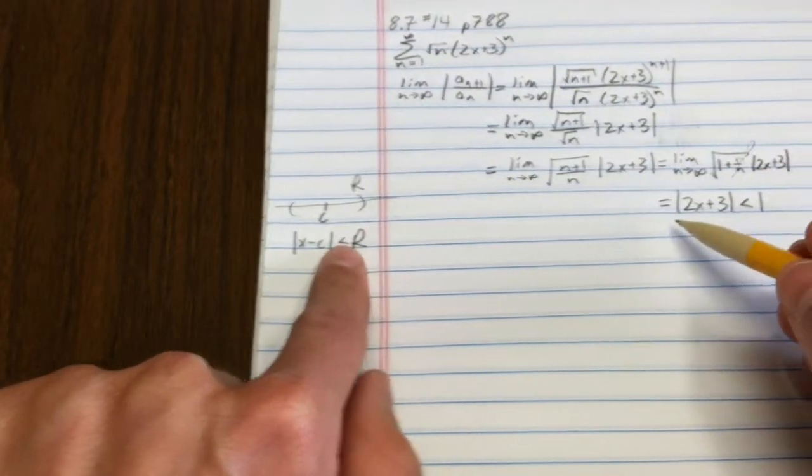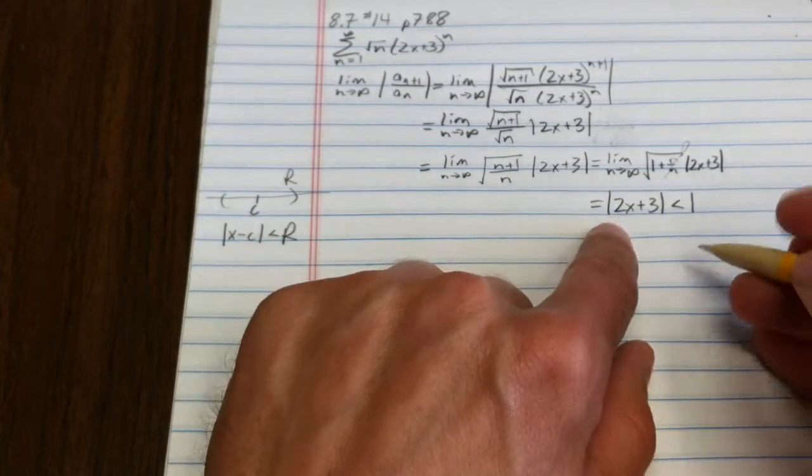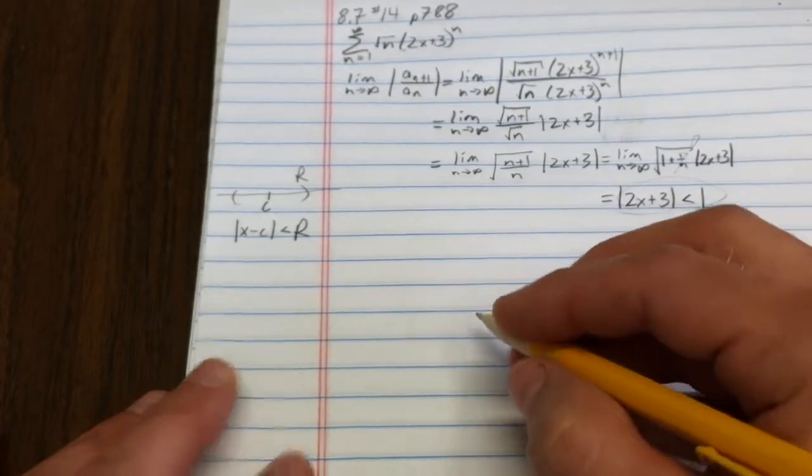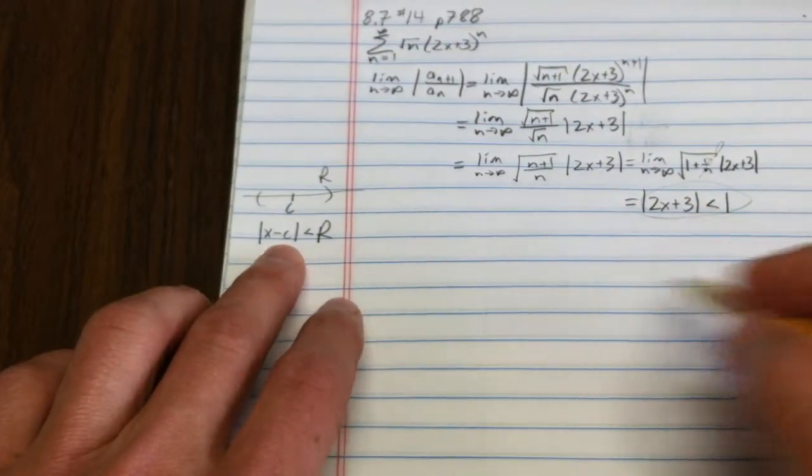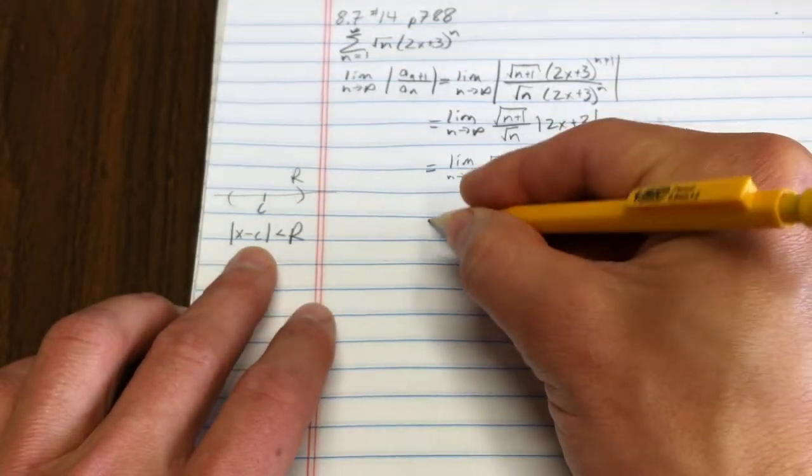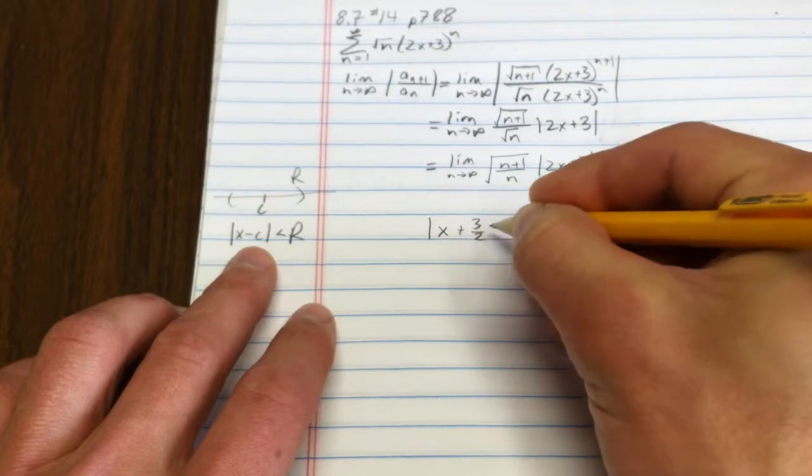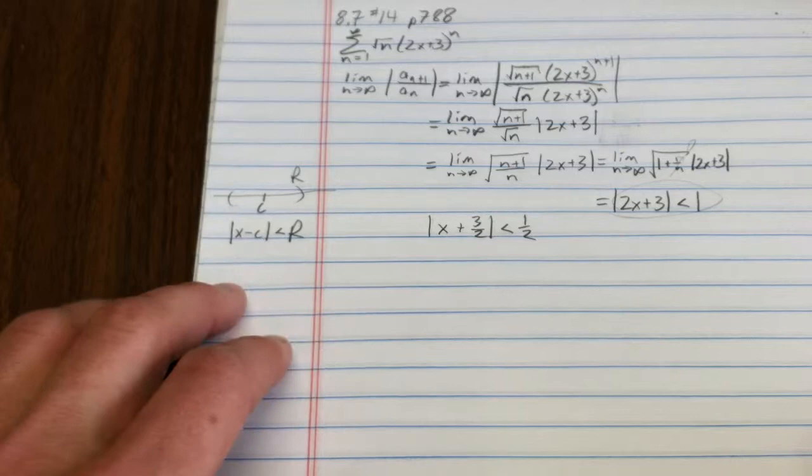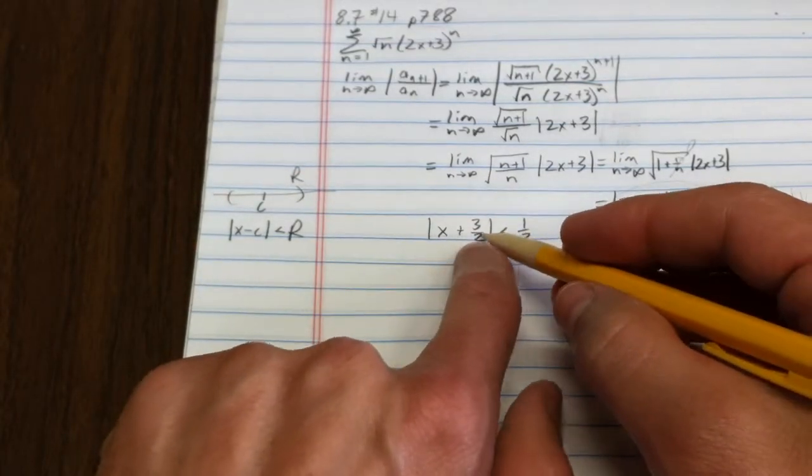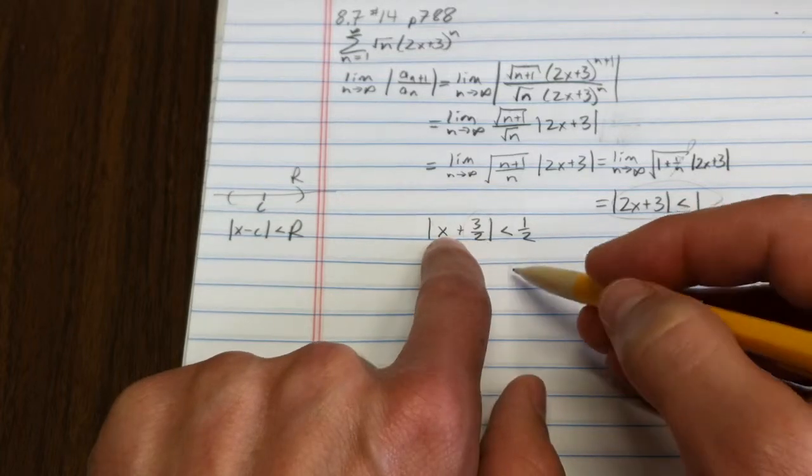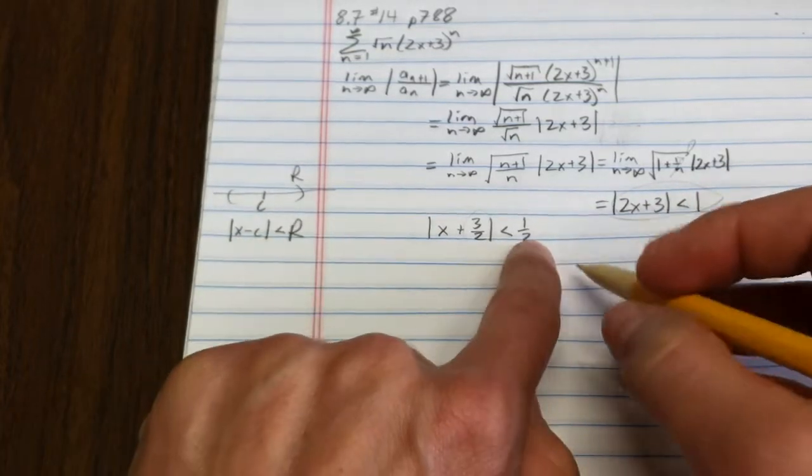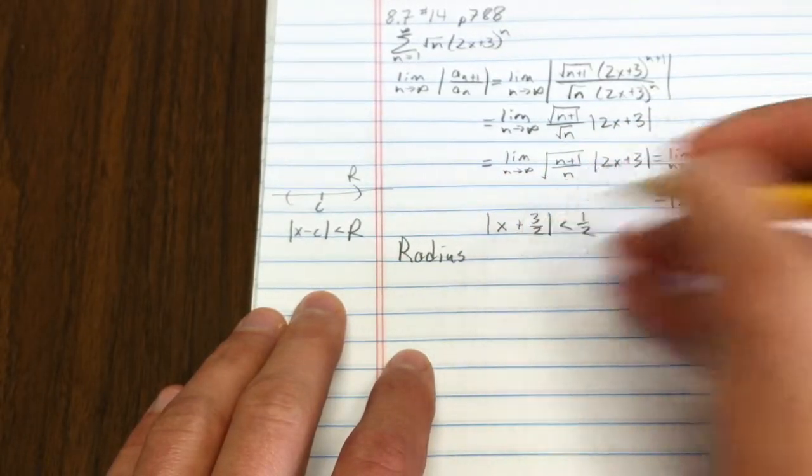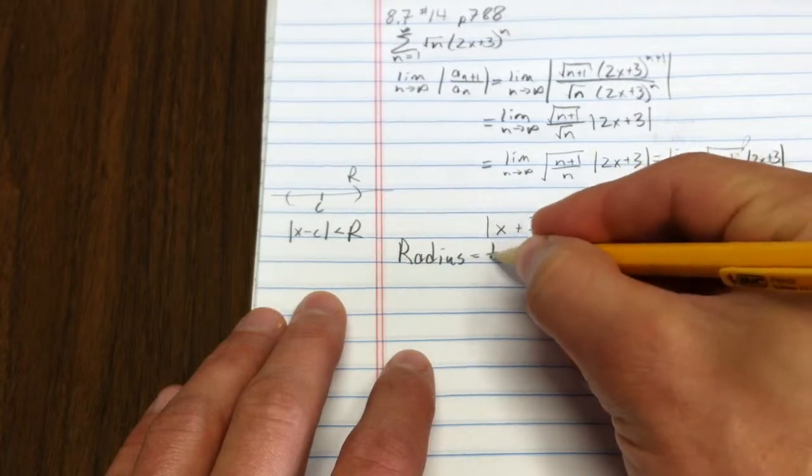How do I get it in that form from this form? Well, the answer is to take that equation and to make it into something like this by dividing everything in sight by 2. So I divide by 2 and I get x plus 3 halves is less than 1 half. That means that the center of my interval is negative 3 halves. It's supposed to be the difference. And my radius is 1 half. Woohoo!